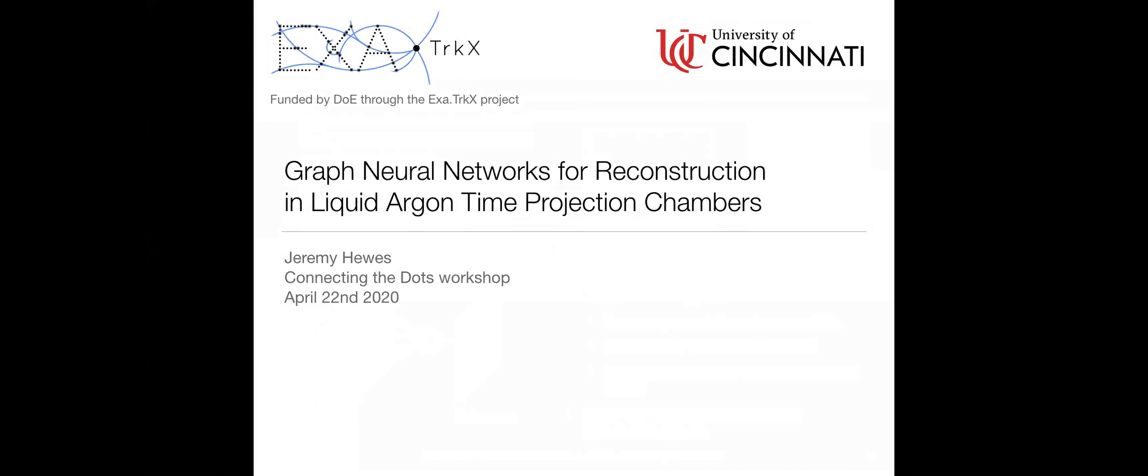Thanks to the organizers for having me. I'm going to talk about some work we've been doing to develop graph neural network techniques for reconstruction in neutrino physics, specifically in liquid argon time projection chambers. The structure of this talk is really just me talking about some things we tried that ended up not working very well, and also a summary of what we're working on now. So I'm not going to be showing any results, I'm going to be talking about the things that we tried along the way.